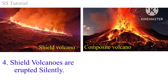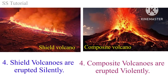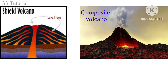Generally, shield volcanoes erupt silently. It means when eruption occurs from a shield volcano, most of the time eruption occurs without explosion. But generally, composite volcanoes erupt violently. It means when eruption occurs from a composite volcano, most of the time an explosion occurs.